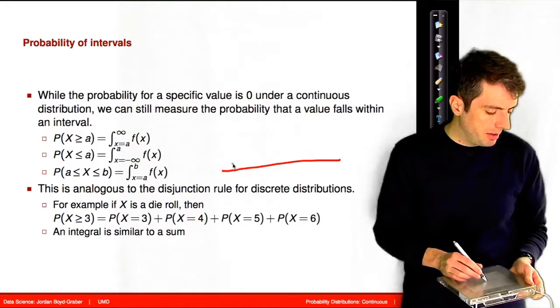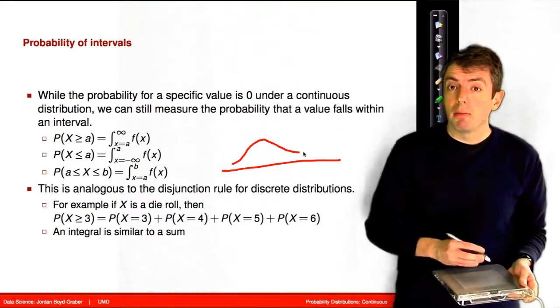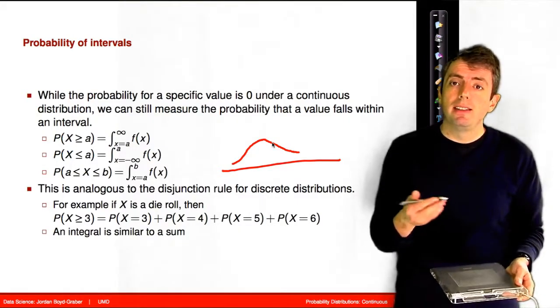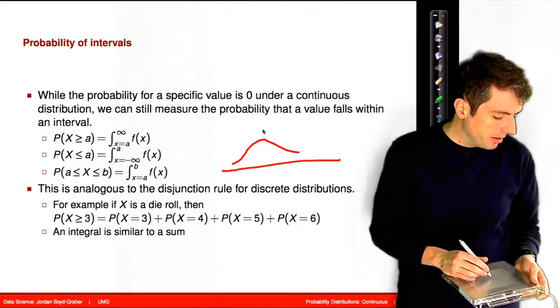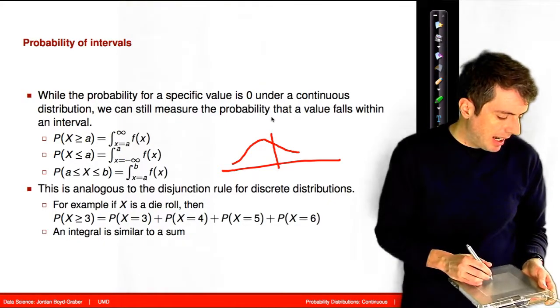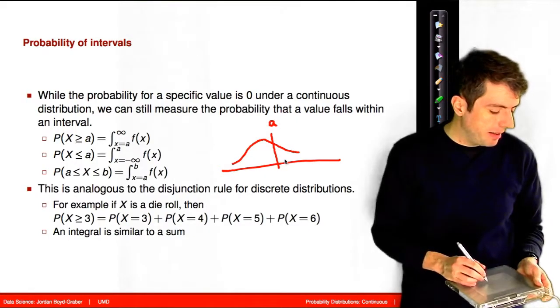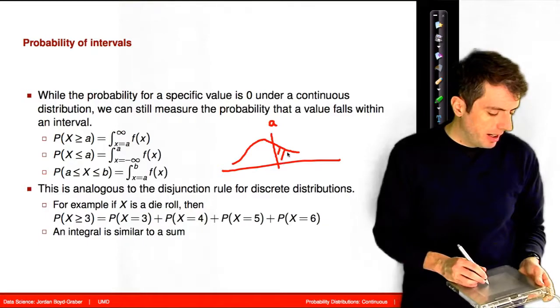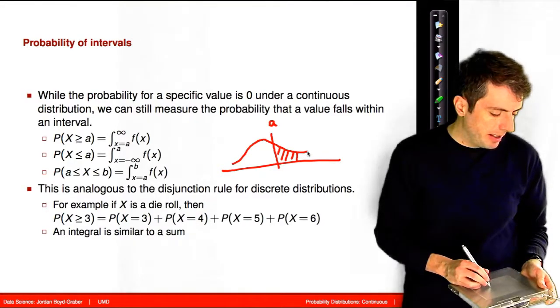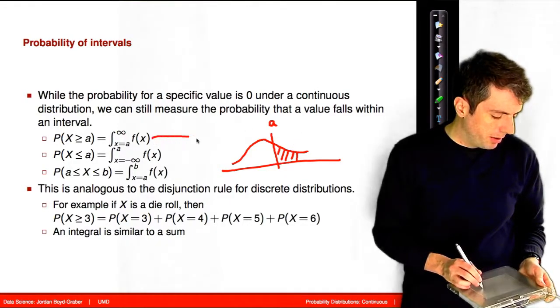So if you have some distribution and you want to ask a probability, that's going to be an integral. And the integral is the area under a curve. And so if you have some value a, and you want to know what is the probability of being greater than a, you take the integral of the curve for everything greater than a. So this corresponds to this first term here.